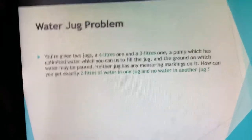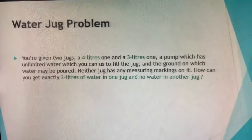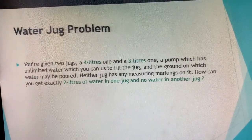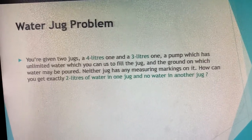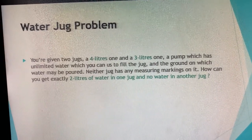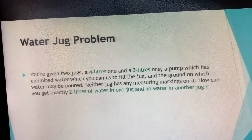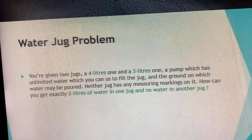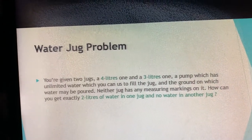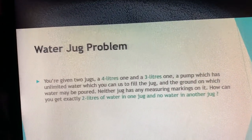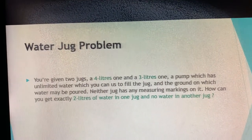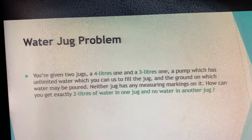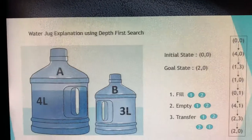This is the problem given by my lecturer, which is the water jug problem. You are given two jugs: a four-liter one and a three-liter one, where A is four liters and B is three liters. There is a pump with unlimited water to fill the jugs and the ground on which water may be poured. Neither jug has any measuring markings. How can you exactly get two liters of water in one jug and no water in the other jug?